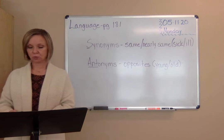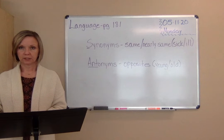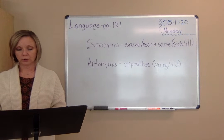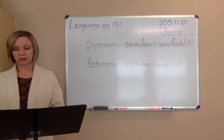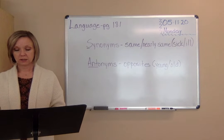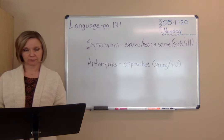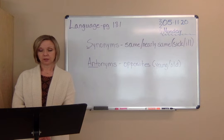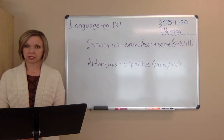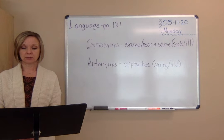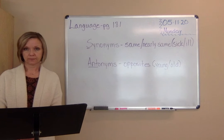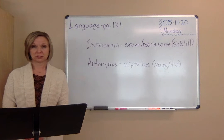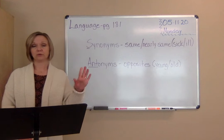Let's look at page 181. Today we're going to add homonyms. Homonyms are words that sound alike or nearly alike but have different meanings. Most homonyms are also spelled differently. Let's look at the first example: blue and blew. B-L-U-E is a color. B-L-E-W is to move air. These are words that sound alike but have very different meanings.